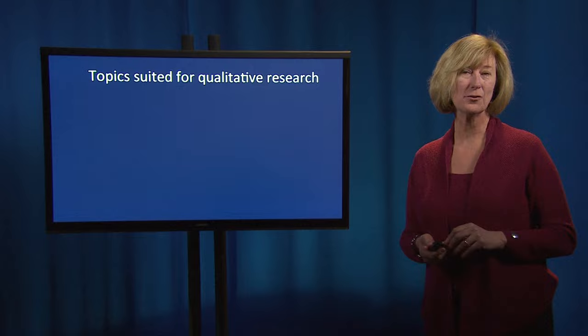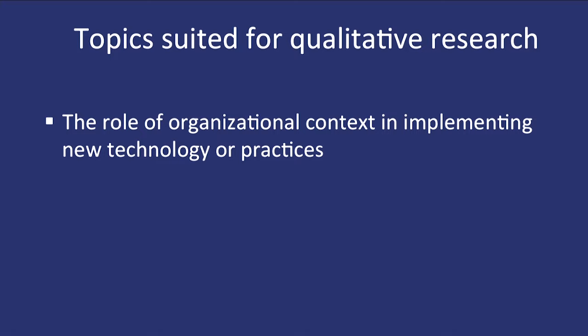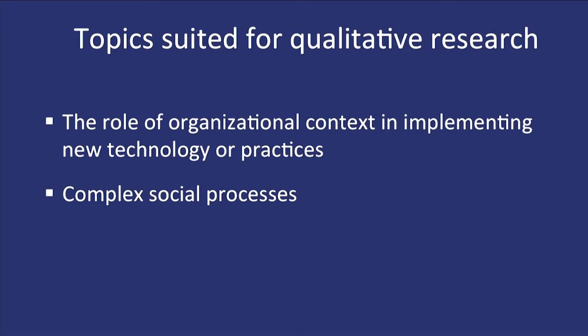There are a number of topics well-suited for qualitative research. Let's review a few examples. The first is the role of organizational context in implementing a new technology or practice. For example, electronic medical records — a new software for EMR being implemented in a primary care clinic setting. What is the role of the broader organizational environment in implementing that technology? What are the barriers and facilitators in that specific environment? A second broad area is complex social processes, such as the dynamics between formal and informal caregivers caring for a frail, homebound older adult living in the community.